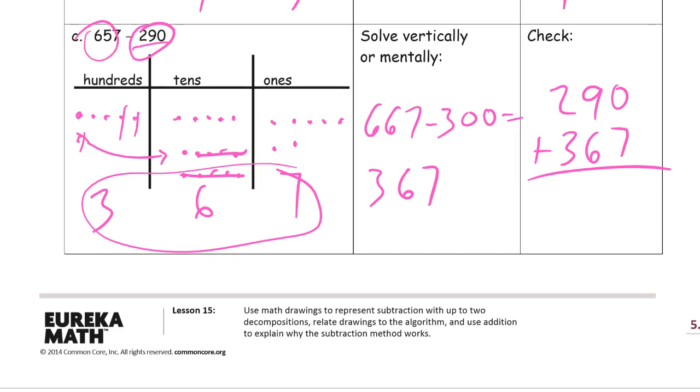290 plus 367. And I'm adding my subtrahend and my difference back together to see if I can get my 657, my minuend. Starting with the ones digits. 7. Tens add up to 15. I have to compose 100. 600s, that's 657.